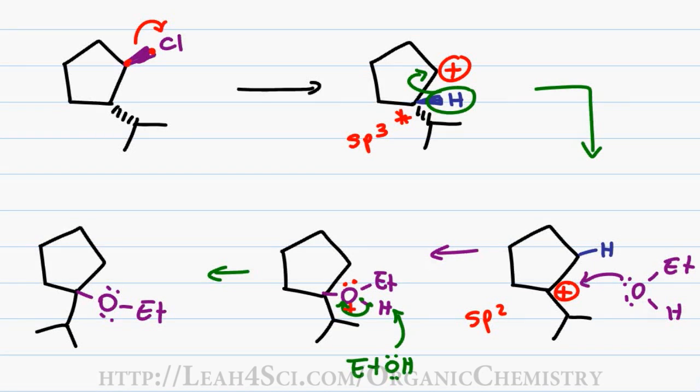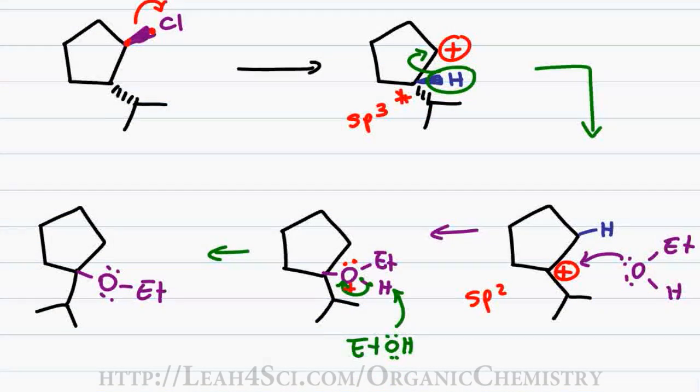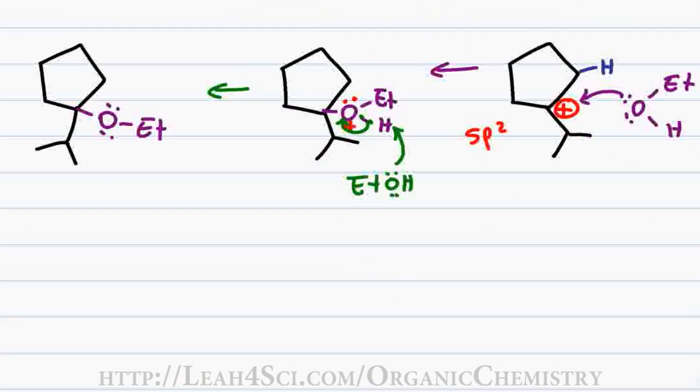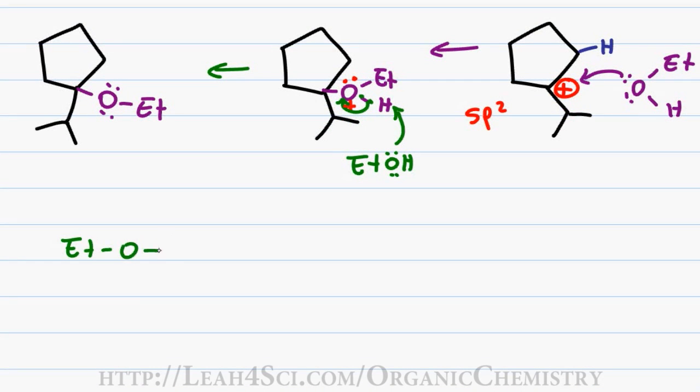Notice that we started with both a neutral molecule and a neutral solvent and our final product is neutral as well. And if you're wondering about the protonated ethanol, it's balanced by the negative chlorine that's off somewhere in solution.